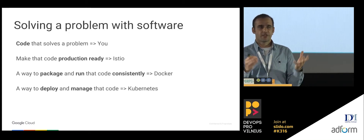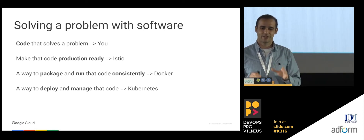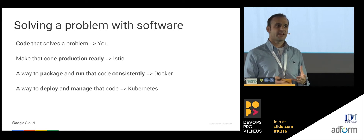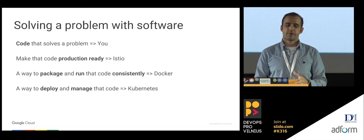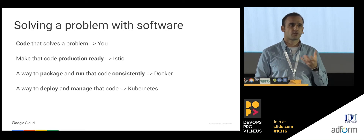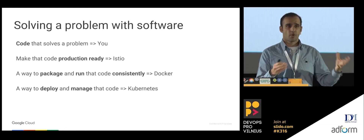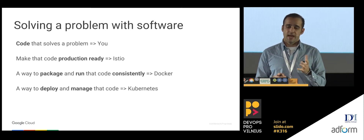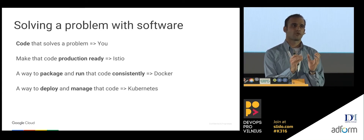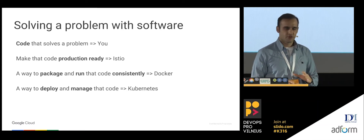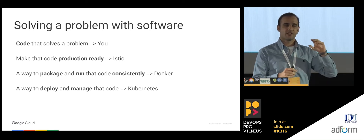In terms of who does these things: writing the code is your responsibility. We have AI coming up, and maybe it'll write our code someday, but as of today, you have to write the code. For packaging and running your code consistently, that's what containers and Docker are about. And once your code is running, you want to manage it — that's what Kubernetes and other container management platforms are for. Istio is more about making your code production-ready. Containers help you package it. Kubernetes makes sure your container is running. But Istio makes your code production-ready.